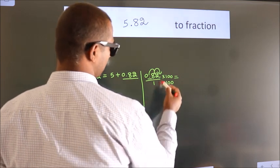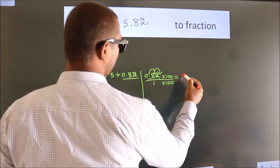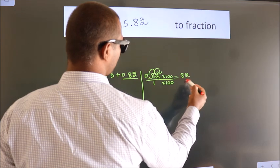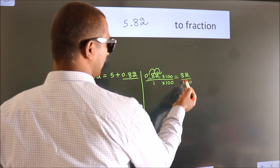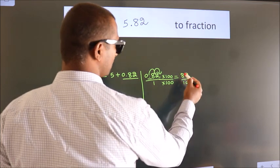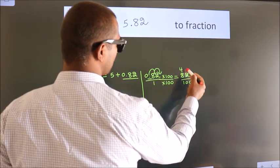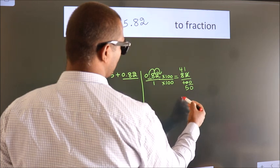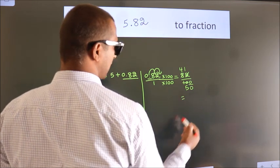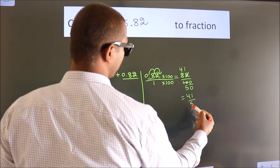0.82 into 100, 82. 1 into 100, 100. Now cancel with 2. 2 4s, 2 1s, 2 5s, this 0 as it is down. So the fraction we got is 41 by 50.